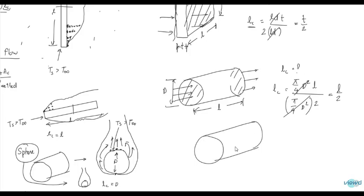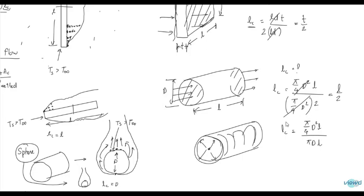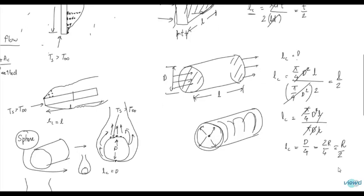Taking the same cylinder but now with heat flowing in the radial direction: the volume remains (π/4)·D²·L, but the surface area perpendicular to radial heat flow is the entire curved lateral surface area, which is π·D·L. After cancellation, Lc is equal to D/4, or equivalently R/2. This is for the cylinder where heat flows from the center to the surface.